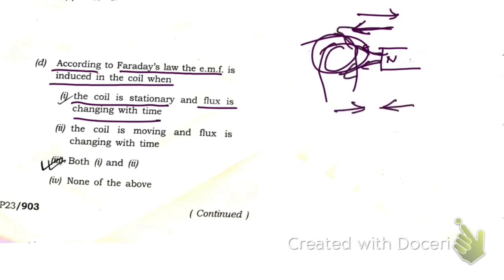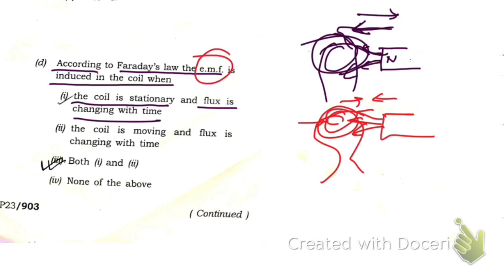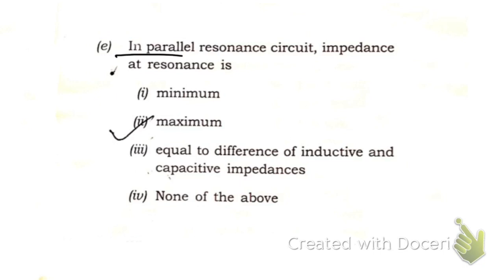If both the coil and magnet are in motion, then also the magnetic field lines will be changing through this coil, and EMF will be induced. That's why the correct option is both 1 and 2, not just the first one. Next question: in parallel resonance circuits, the impedance at resonance is maximum. This is the correct answer - option 2.